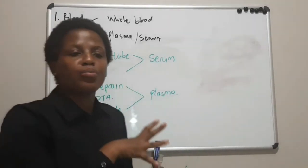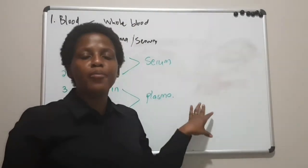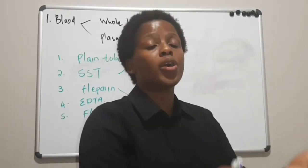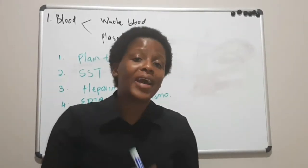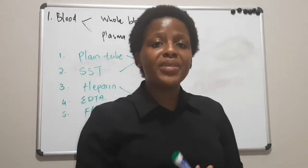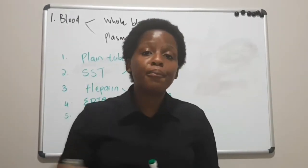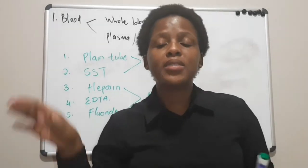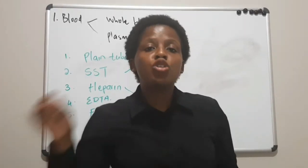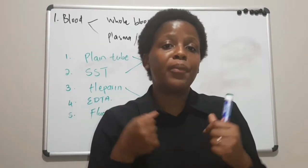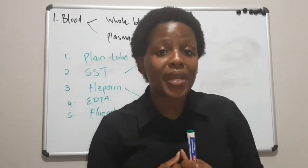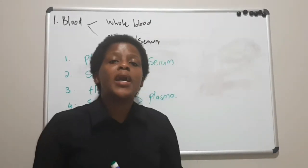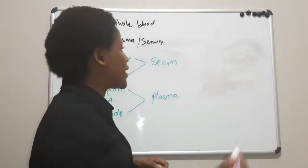How are these blood samples processed before we can analyze them? As soon as the phlebotomist has drawn the blood from the patient, with serum tubes — the SST or plain tube — we must let them sit for about 30 minutes so that the blood can clot completely, which gives a better result. After the blood has clotted completely, we centrifuge it at a speed of 3000 RPMs.